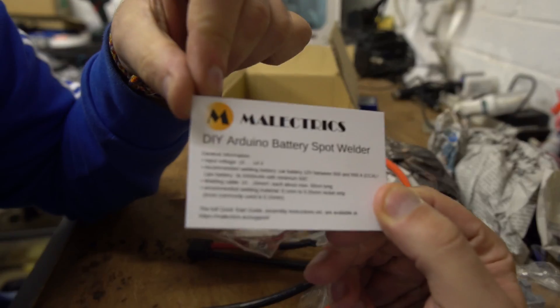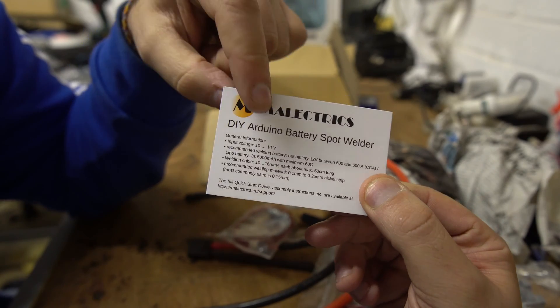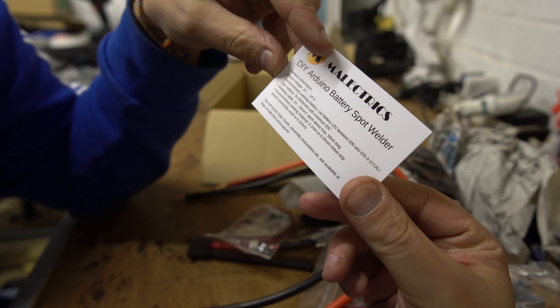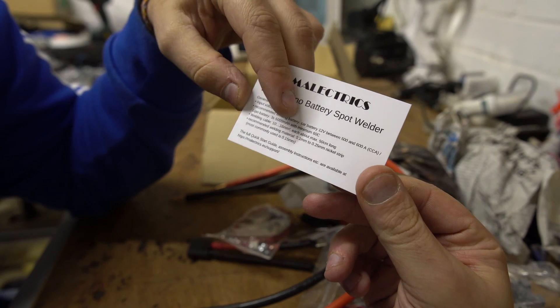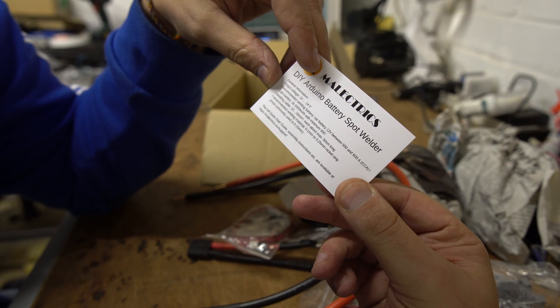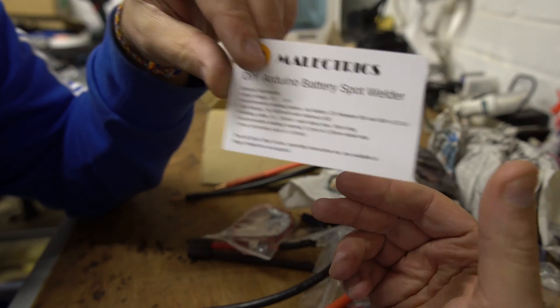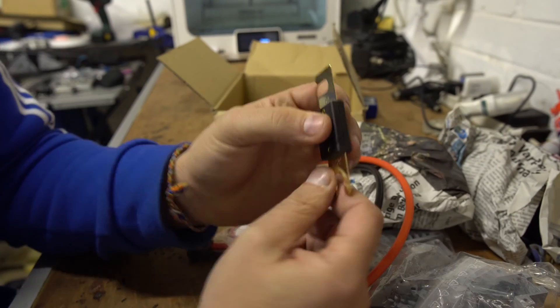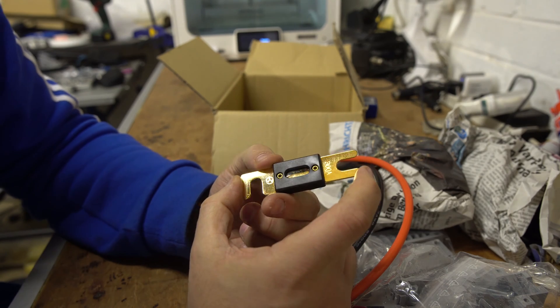Here we go, the Meletrix spot welder DIY Arduino battery spot welder, so it's Arduino based again. Input voltage 10 to 14, recommended welding battery car battery or a lipo battery 3s 5 amp hour with minimum 60c. We don't have a 60c battery so that will be interesting to see what happens with this. For full quick start guide assembly instructions are available at meletrix.com, we'll definitely be looking at that. The one good thing about this guys and the reason why I actually went for this in the end is this huge fuse, 300 amp slow blow fuse.